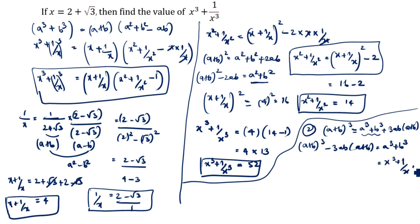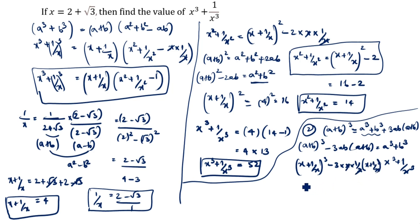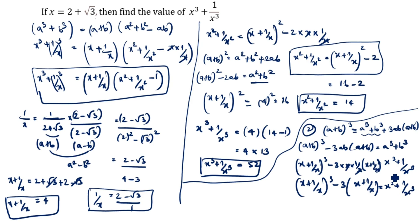So x cube plus 1 by x cube equals x plus 1 by x whole cube minus 3 into x into 1 by x, open bracket x plus 1 by x. The x's cancel, giving x plus 1 by x whole cube minus 3 times x plus 1 by x, equal to x cube plus 1 by x cube. What is x plus 1 by x? It is 4. So this becomes 4 cube minus 3 times 4.